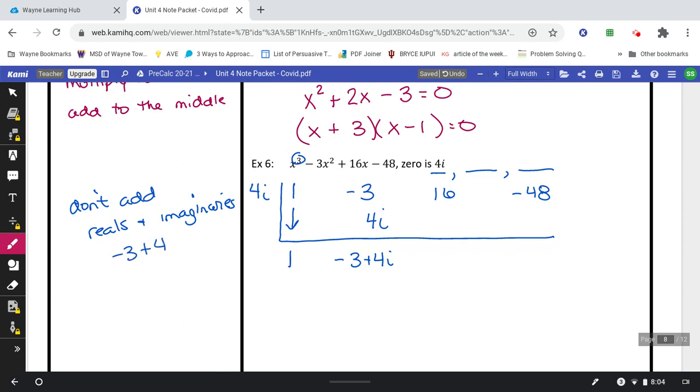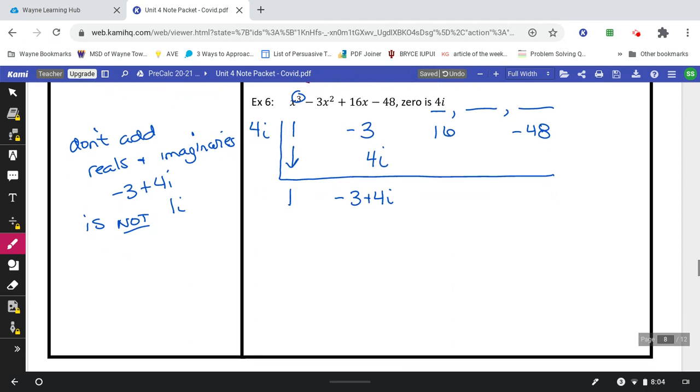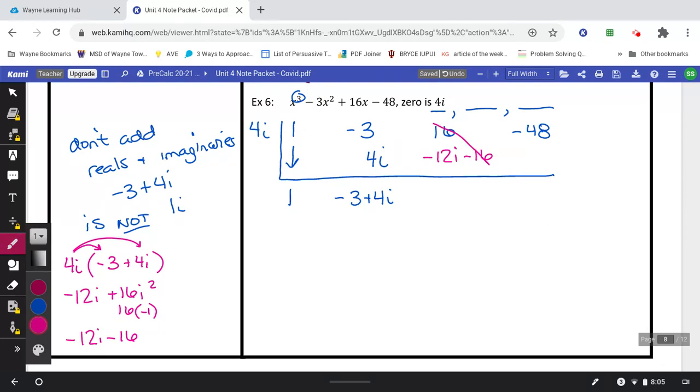So don't add reals and imaginaries. For example, negative 3 plus 4i is not 1i. You just leave it like negative 3 plus 4i. The next thing we're going to do is take 4i and multiply it by negative 3 plus 4i. Negative 12i plus 16i squared. Last week, we learned that i squared was negative 1, so this is actually 16 times negative 1. So I have negative 12i minus 16. And I'm going to put that right here under the 16, negative 12i minus 16. Now, I can combine my real numbers here. Positive 16 and negative 16 cancel. And then I'm just left with negative 12i.